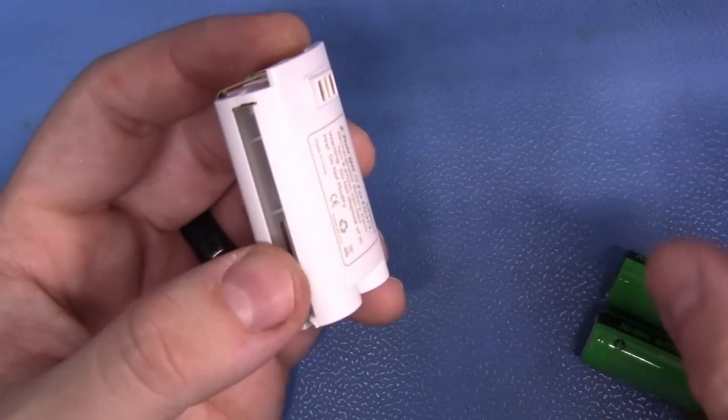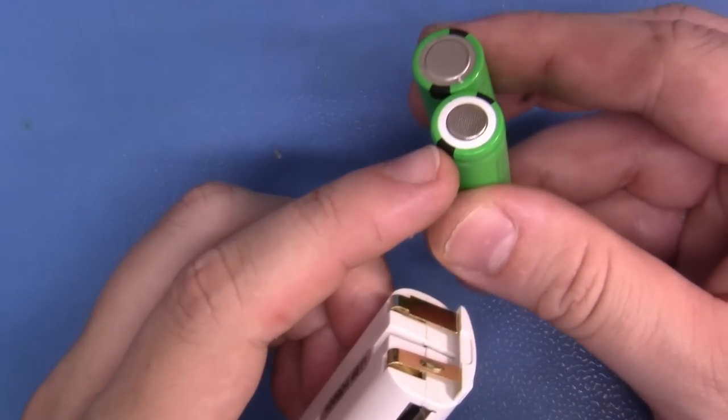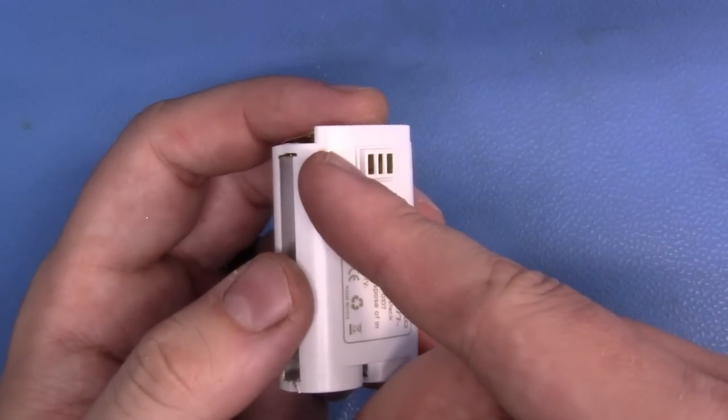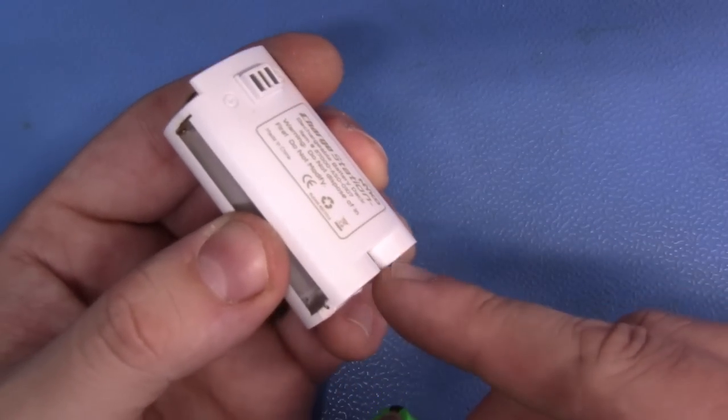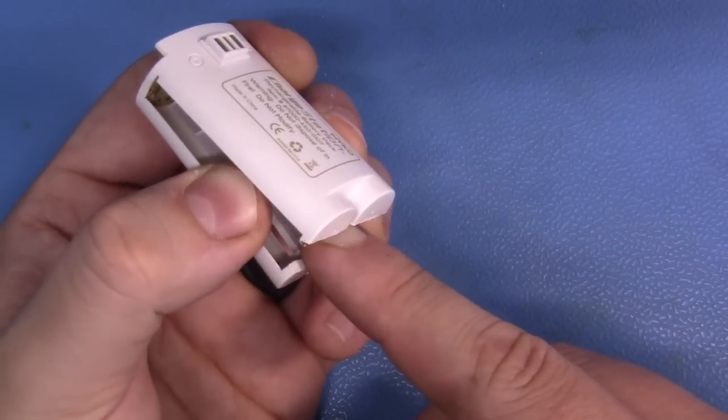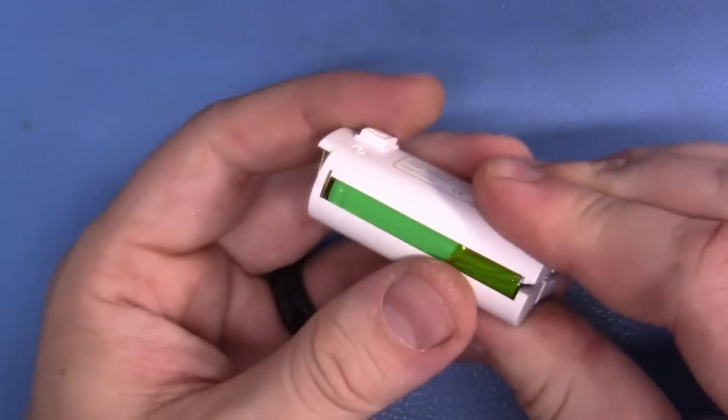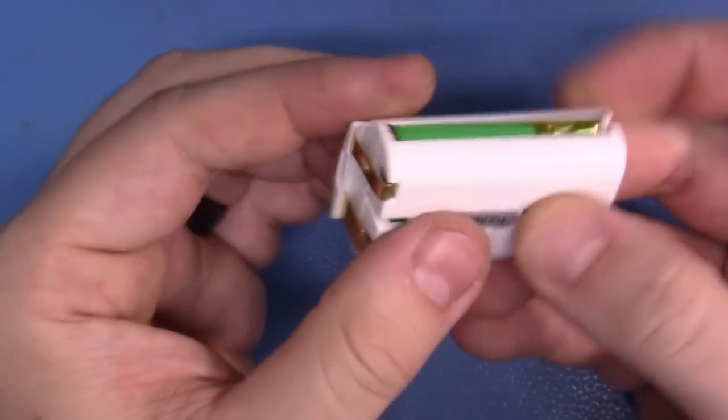Now, I know that this here is clearly the positive terminal. This is the negative terminal. This is the positive. This is the negative. We're just going to slowly and carefully, don't break it, widen this out, and we're just going to very gently put it in there just like that.